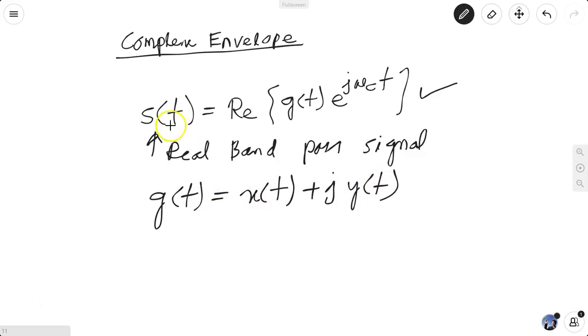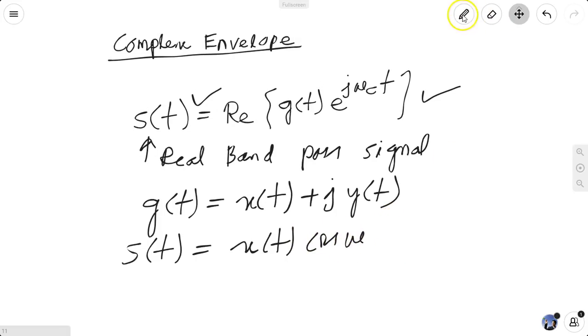Plugging g(t) into this equation, we have s(t) equals x(t)cos(ωct) minus y(t)sin(ωct). Now any bandpass signal should be compared with this format. Then extract x(t) and y(t), plug it here, and you have the complex envelope.